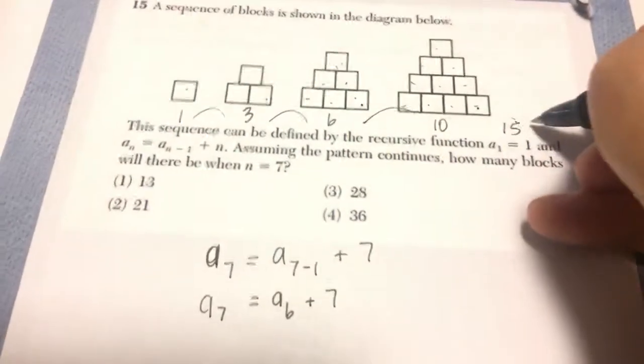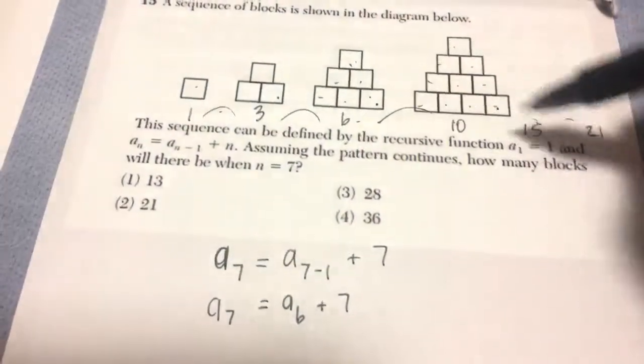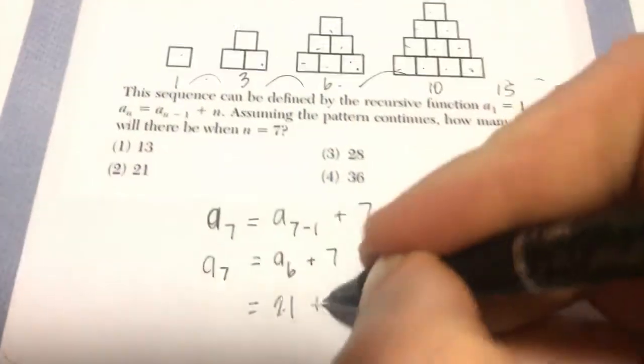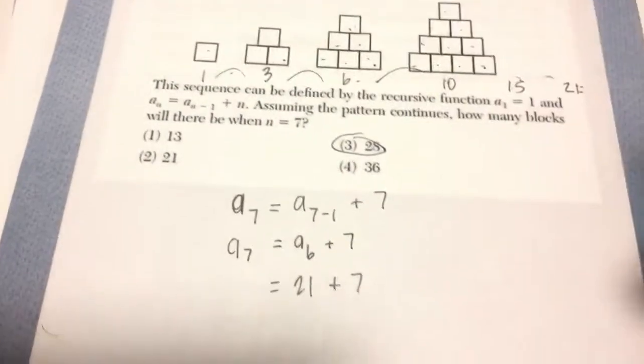So in the sixth set of blocks we're going to have 21 blocks. And we should be adding 7 to it. So we should be getting 28. Thank you.